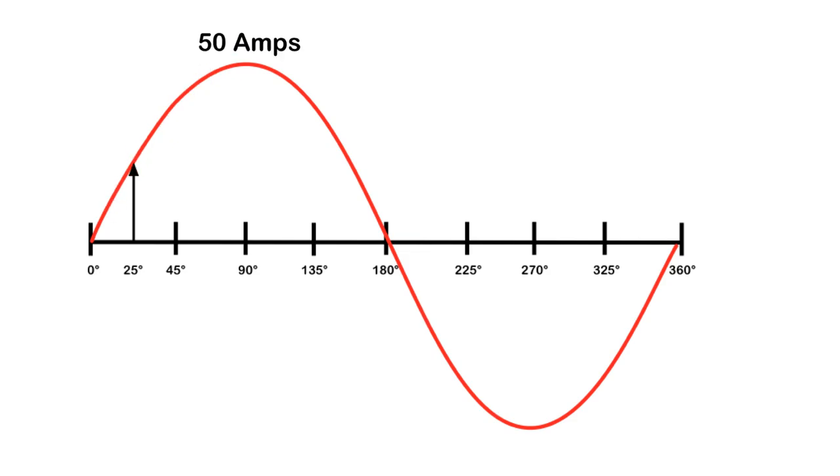As an example, let's take a sine wave that has a maximum current of 50 amps, and I want to calculate what is the current going to be 25 degrees into the cycle. Plugging what we know into the formula, we just take the sine of 25 degrees times the 50 amps, and I end up with 21.1 amps, which tells me that my current at 25 degrees into the cycle right there is going to be 21.1 amps.